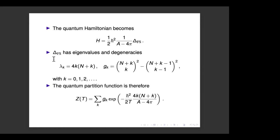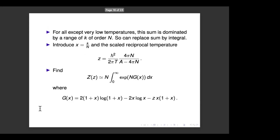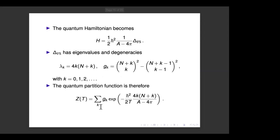The eigenvalues and degeneracies of the Fubini-Study Laplacian on CP^N are known explicitly — CP^N has very large symmetry, especially for large N. The eigenvalues are labeled by non-negative integers k: λ_k = k(N+k)·4, with degeneracy given by the combinatorial factor [(N+k)!/(N! k!)]² minus [(N+k-1)!/(N!(k-1)!)]².